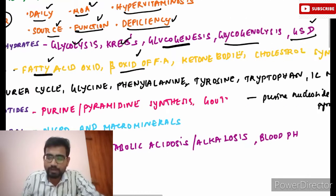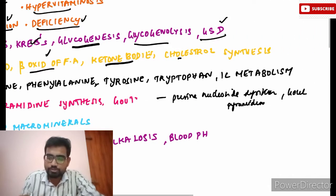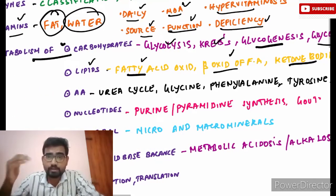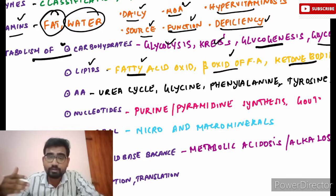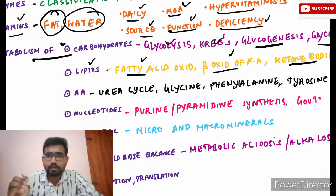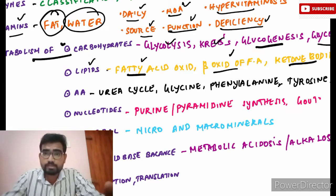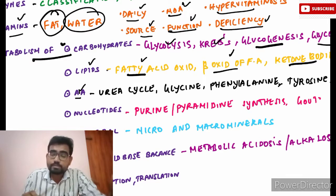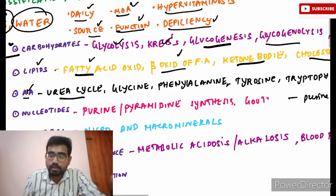For lipid metabolism, read about fatty acid oxidation, beta-oxidation of fatty acids, ketone bodies, and cholesterol synthesis. Write and read these cycles repeatedly — they are very volatile and easy to forget if you're not in regular contact with them. Write them out and stick them on your walls so you see them on a day-to-day basis; that will make it much easier to remember.